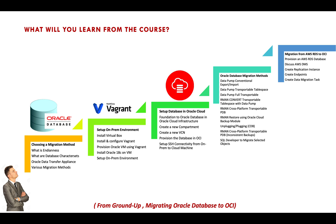Then we'll move into the Oracle Cloud side — our on-prem setup is done. We'll set up our database in Oracle Cloud. I'll talk about what compartments are and how you create a VCN (virtual cloud network) with very important terminologies. You need to have a good in-depth understanding of these concepts.